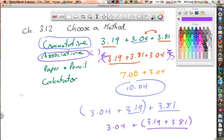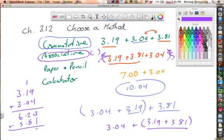Paper and pencil would be just adding them up in a standard way. 3.19, 3.04, we could just add these up. 9 plus 4 is 13... and then we'll add that third one, which is 3.81, and add again... 10.04, which is what we got over here, too. We got 10.04, but we just added. We didn't do it in our head. We just used paper and pencil.